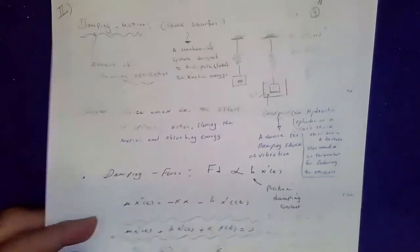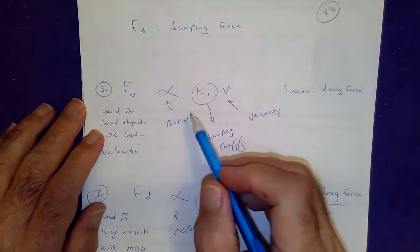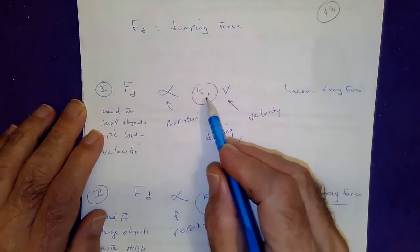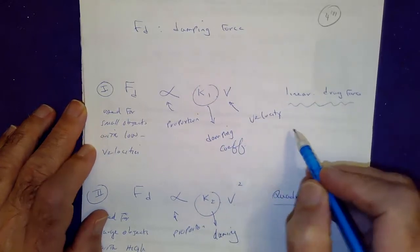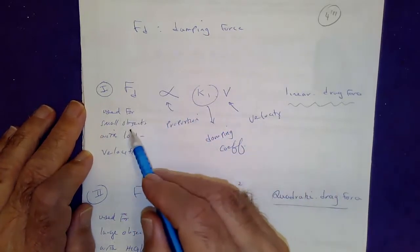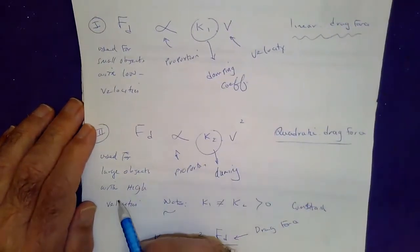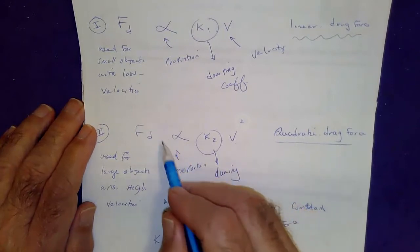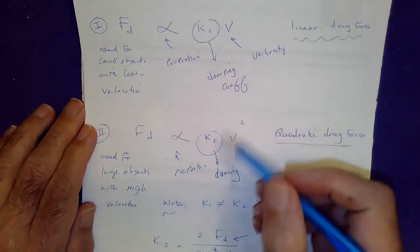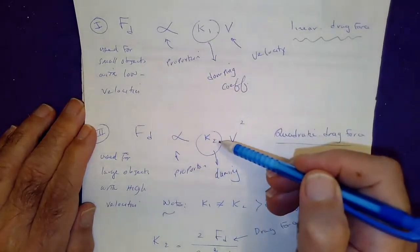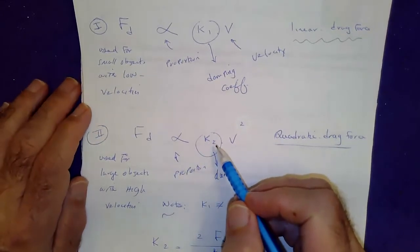In general, damping force is denoted by f sub t and is proportional to some constant times velocity — that's called the linear damping force. We use this kind of proportionality for small objects with low velocity. For large objects with high velocities, the damping force is proportional to v squared. In both cases, k1 and k2 are positive constants called the damping coefficient.